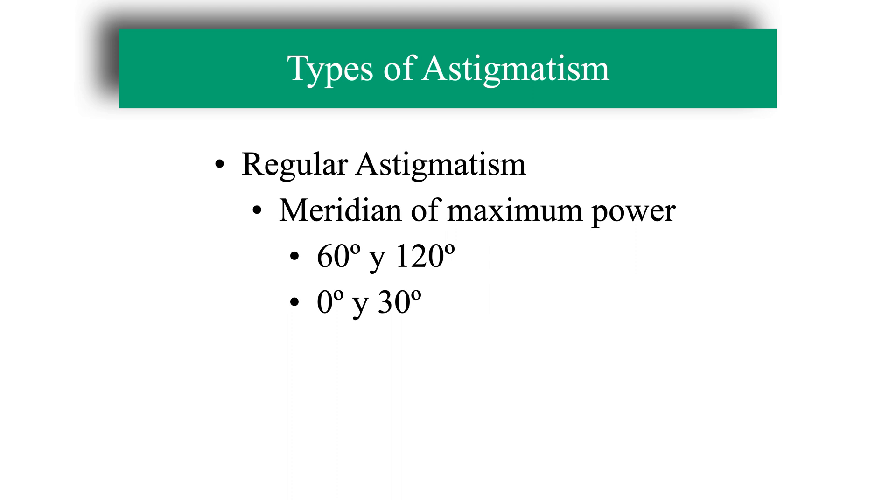Ocular astigmatism is generally a regular astigmatism, that is, the refraction for each meridian is the same throughout its length and the two main meridians form a right angle.